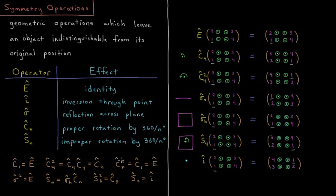If I do cn to the n, that's 360 over n degrees times n would be 360 degrees, which would be c1, which would be e. So cn to the n would be the identity.